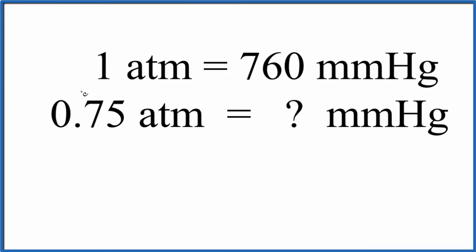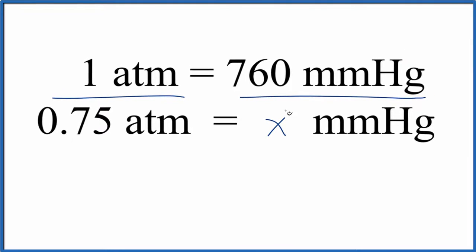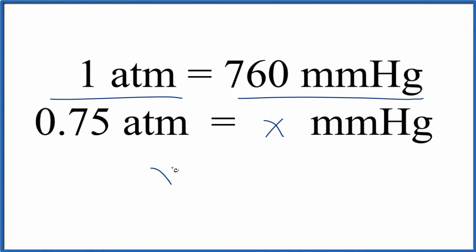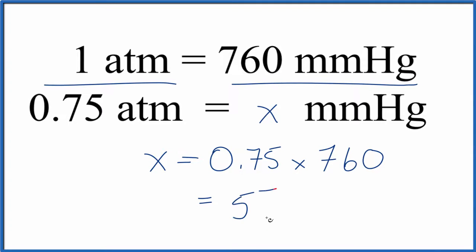So the first way we could just set up a ratio here, and we're looking for millimeters of mercury here, let's call this X. Then we just cross multiply: 1 times X gives us X, 0.75 times 760 gives us 570, and we're looking for millimeters of mercury. So that's the first way you could do it. 0.75 atmospheres is equal to 570 millimeters of mercury.